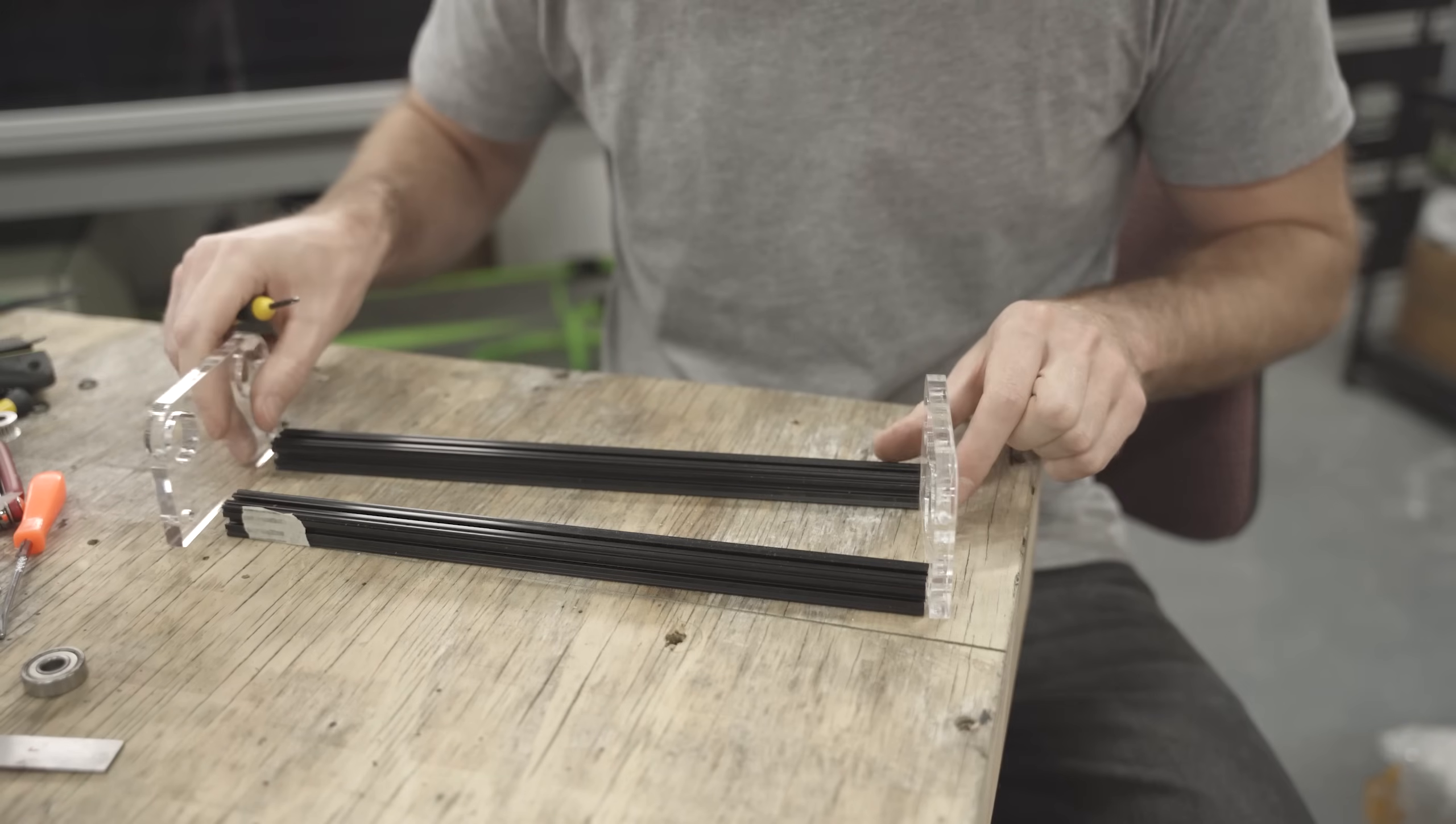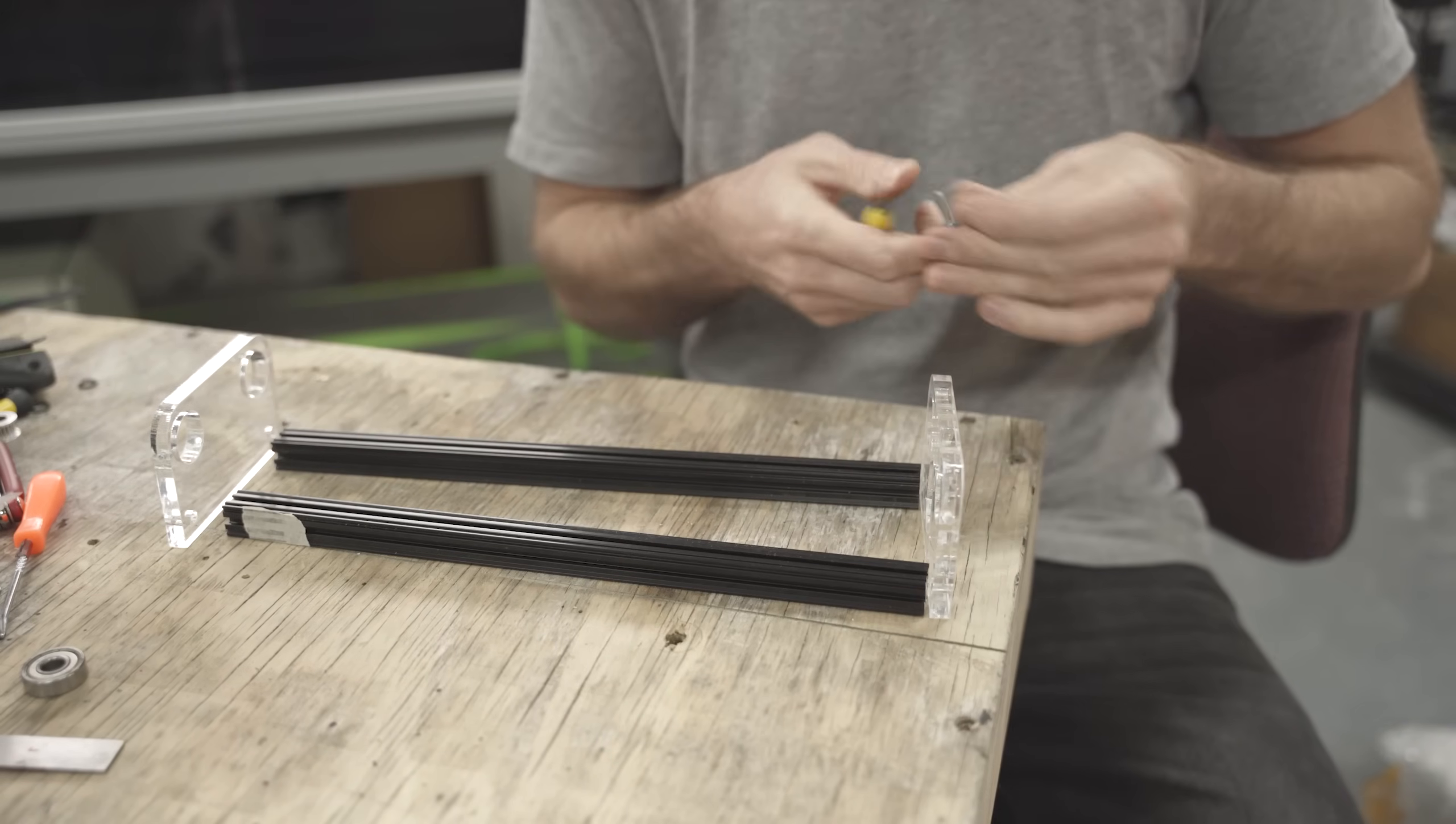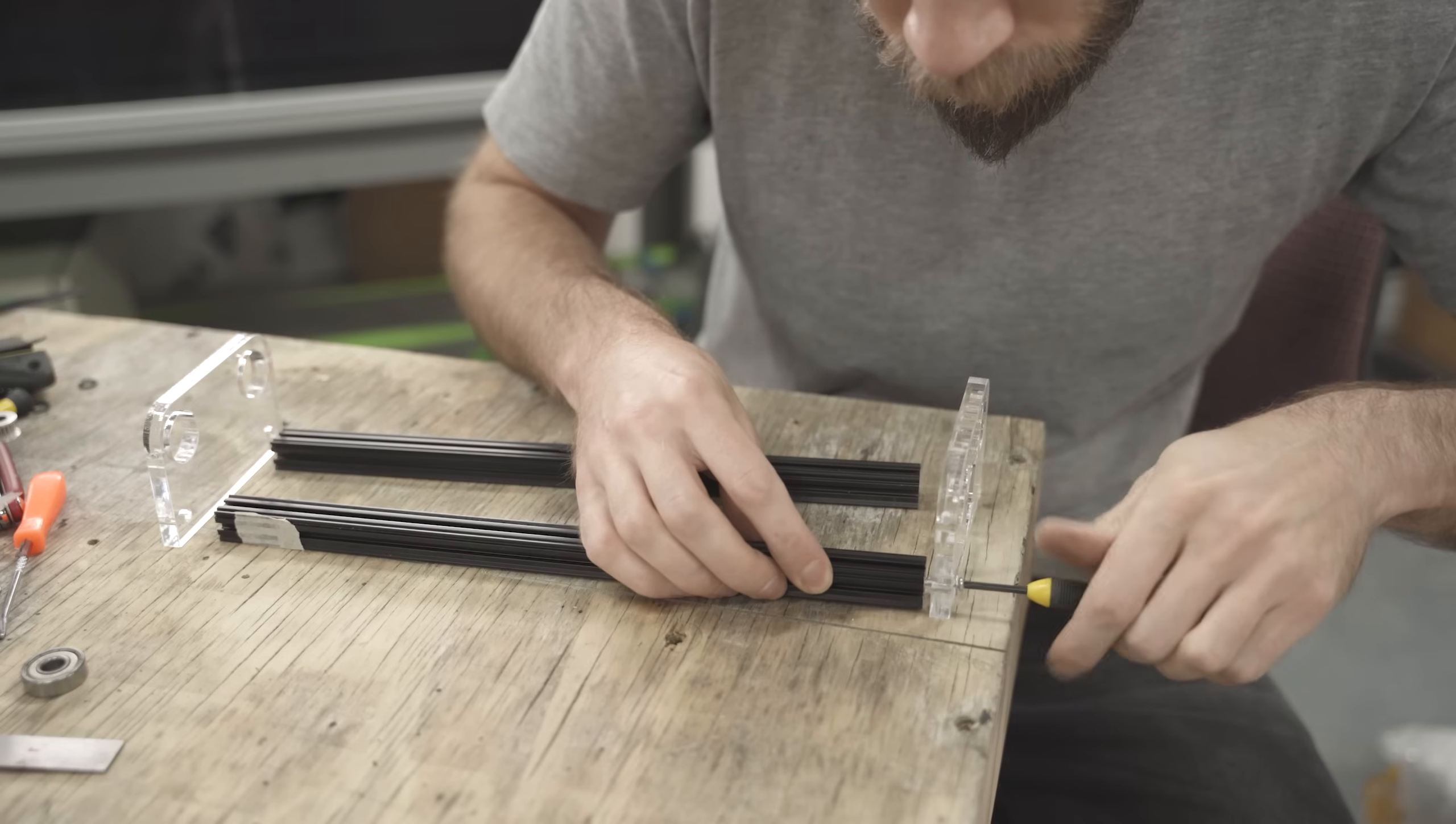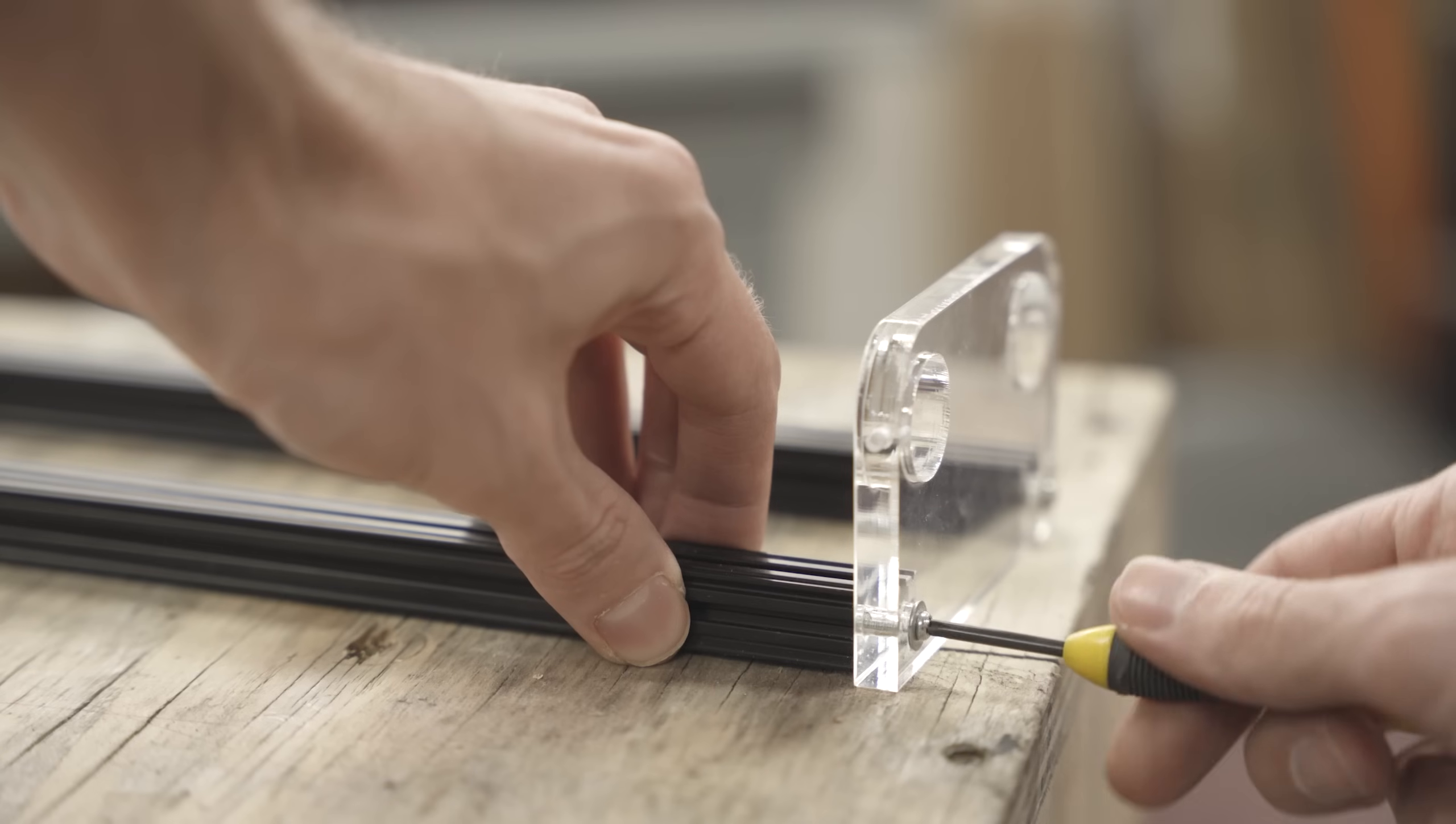And then off-camera I also tapped a thread into the ends of these aluminum extrusions. They're just a couple of pieces of open beam that I had lying around from a previous 3D printer build.